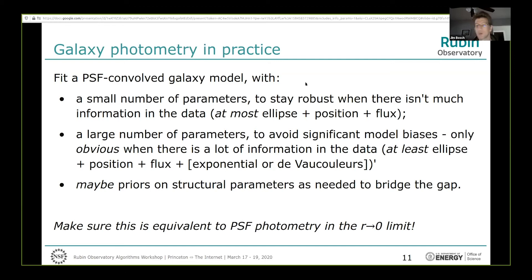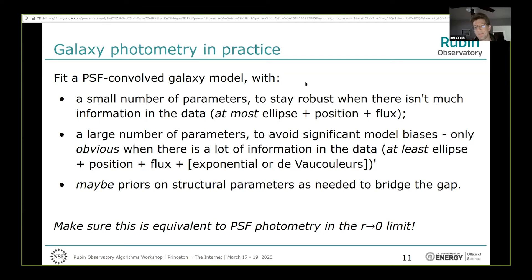The most common approach is to fit a PSF-convolved galaxy model. With a small number of parameters you stay robust when there isn't much information — in practice that means fitting at most an ellipse, position, and flux. But you also want a large number of parameters to avoid significant model biases from getting the profile wrong, especially for well-resolved galaxies. In practice you need position, flux, ellipses, and something that distinguishes de Vaucouleurs from exponential profiles, and ideally more. You probably need priors on structural parameters but not directly on flux. And the estimator should be equivalent to PSF photometry as the deconvolved radius goes to zero.